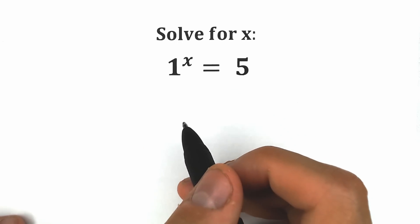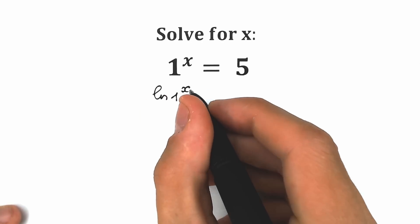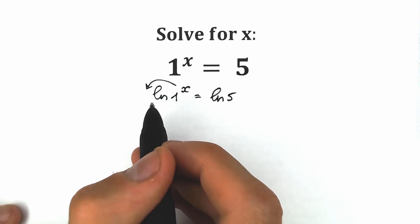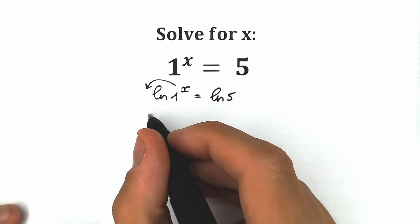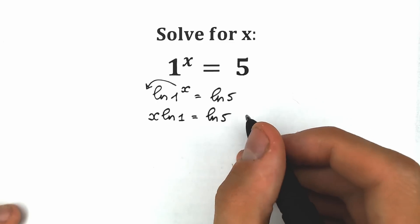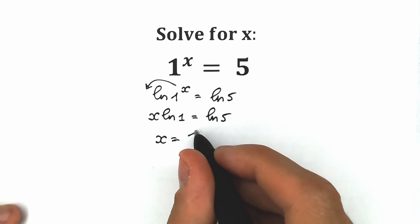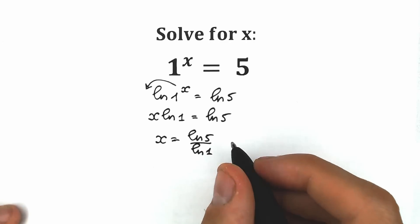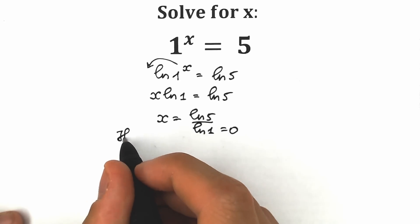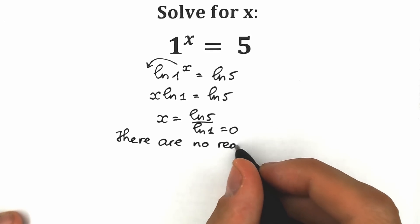So first of all, if you have this challenge on your exam, you might say: I'm going to apply natural log on both sides. So we have natural log of 1 to the x on the left side equal to natural log 5 on the right side. Then we bring the x down using the log power property, giving us x times natural log 1 equal to natural log 5. Dividing both sides by natural log 1, we get x equal to natural log 5 over natural log 1. But natural log 1 equals 0, so we'd be dividing by zero — there are no real solutions.